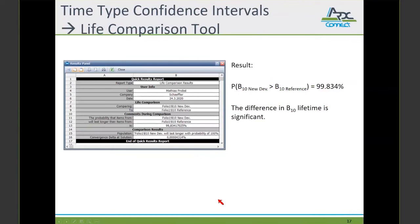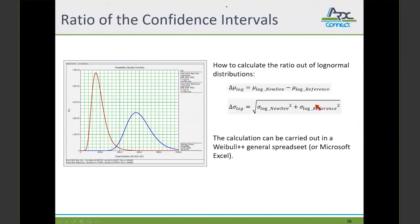Once we have calculated the B10 confidence distribution, we can apply life comparison tool once again. In this case, we have to choose as a data set the B10 log-normal distributions of new development and reference. As a result, it's 99.83%. So the interpretation would be the probability that B10 new development is larger than B10 of the reference calculates to 99.83%. This is a real significant difference.